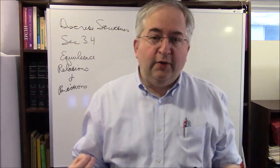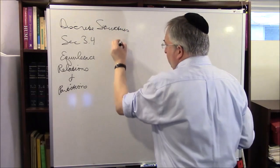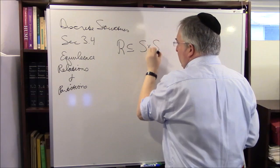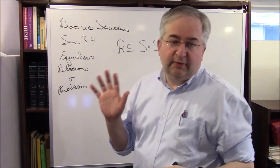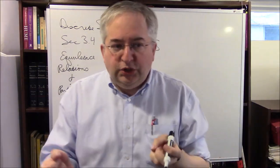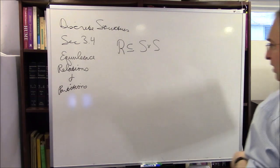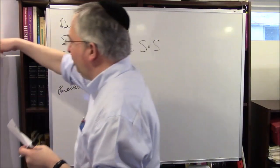Let me just give you the intuition. An equivalence relation is a relation on a set with itself, like we had before. So it's going to be a relation R, which is a subset of S cross S, which satisfies certain requirements that show that things are in some sense the same. Two objects are going to be related if they're in some sense the same.